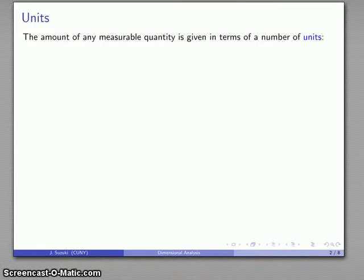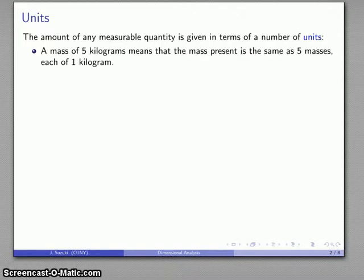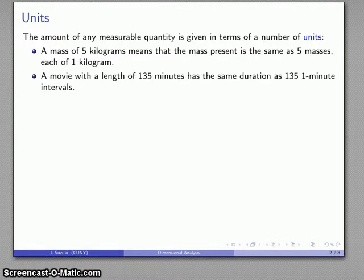Anytime you measure a quantity, the amount of the quantity present is given in terms of a number of units. For example, if you talk about a mass of five kilograms, what you mean is that the mass that is present is the same as five masses, each of one kilogram.